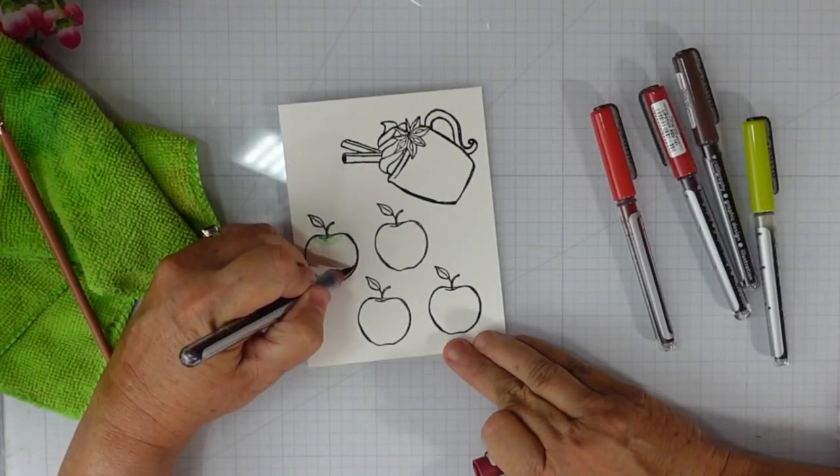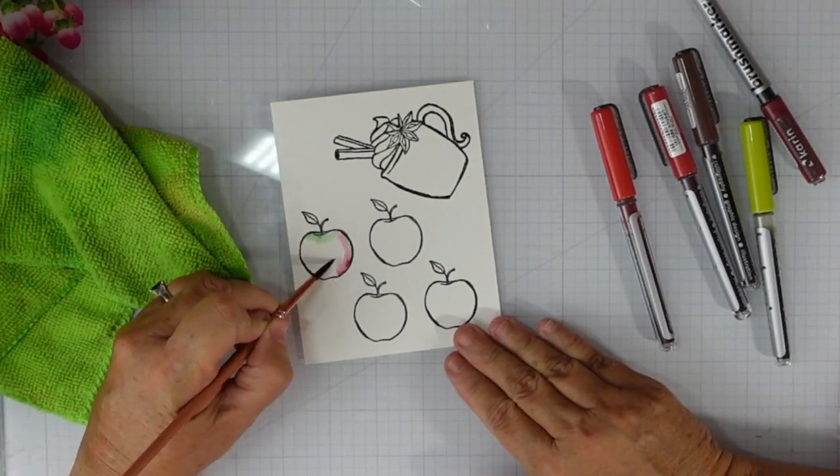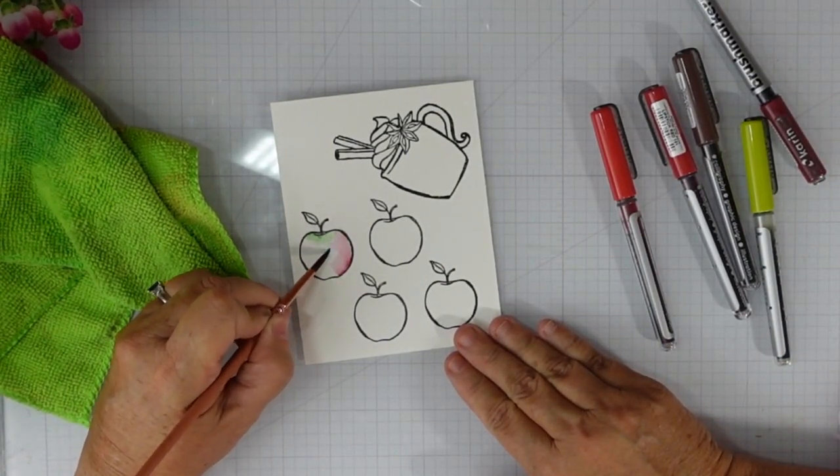I began by adding a lot of water to this first apple. I want it to look like a Macintosh, so the Macintoshes have that little bit of green where the stem comes out.